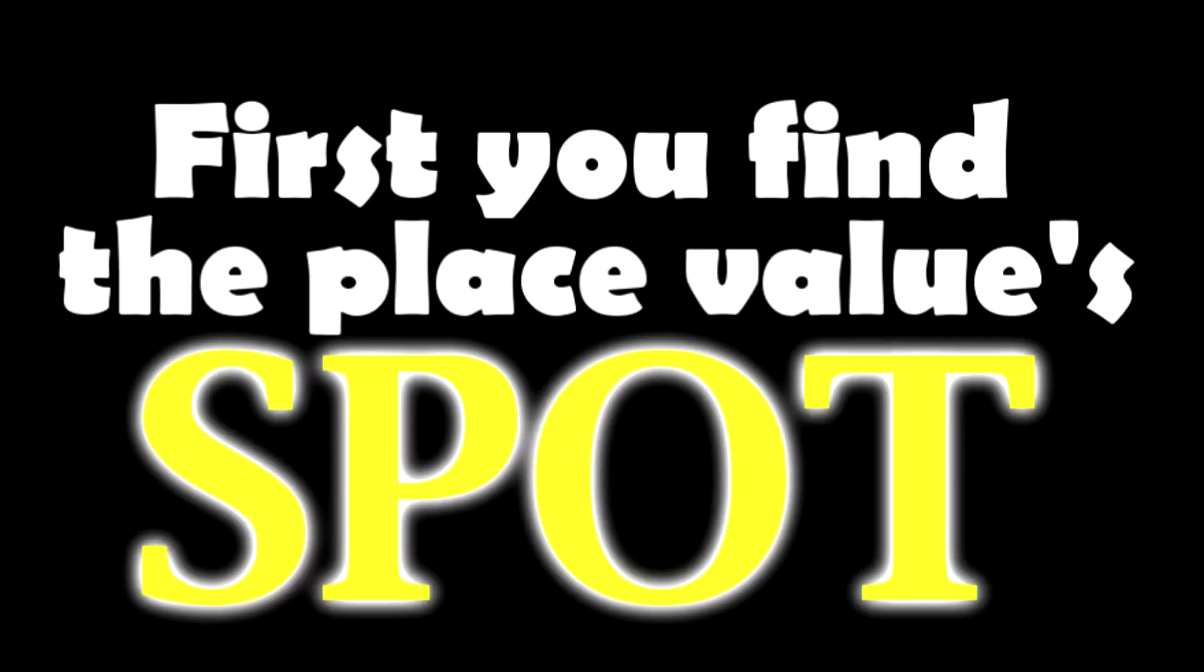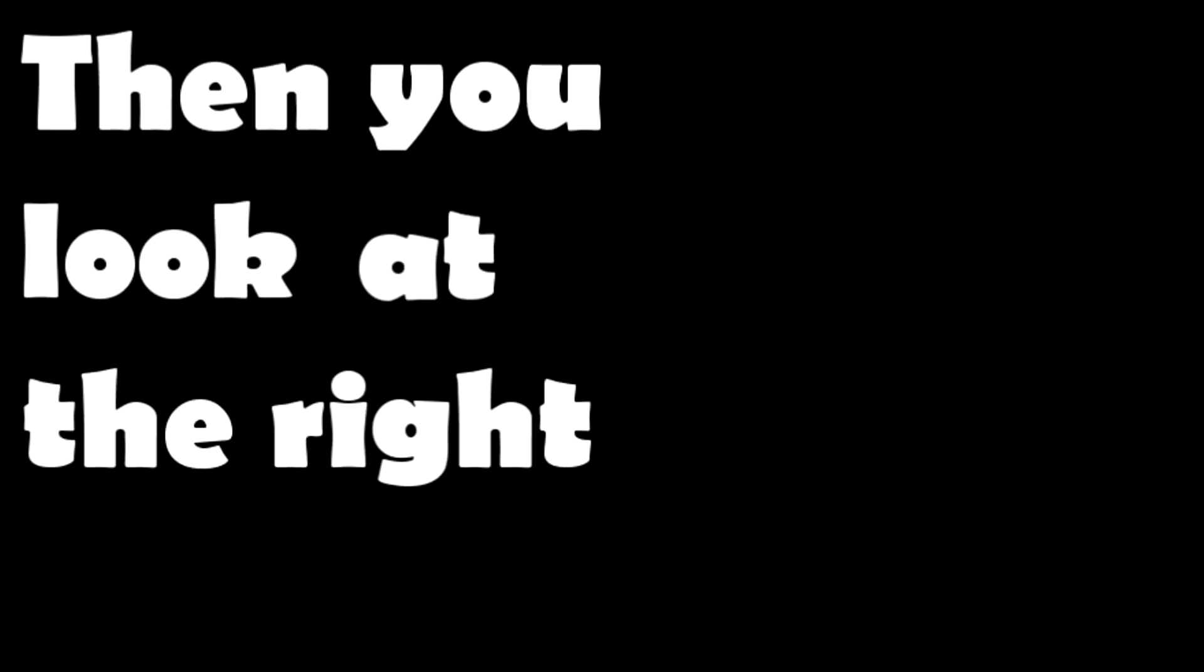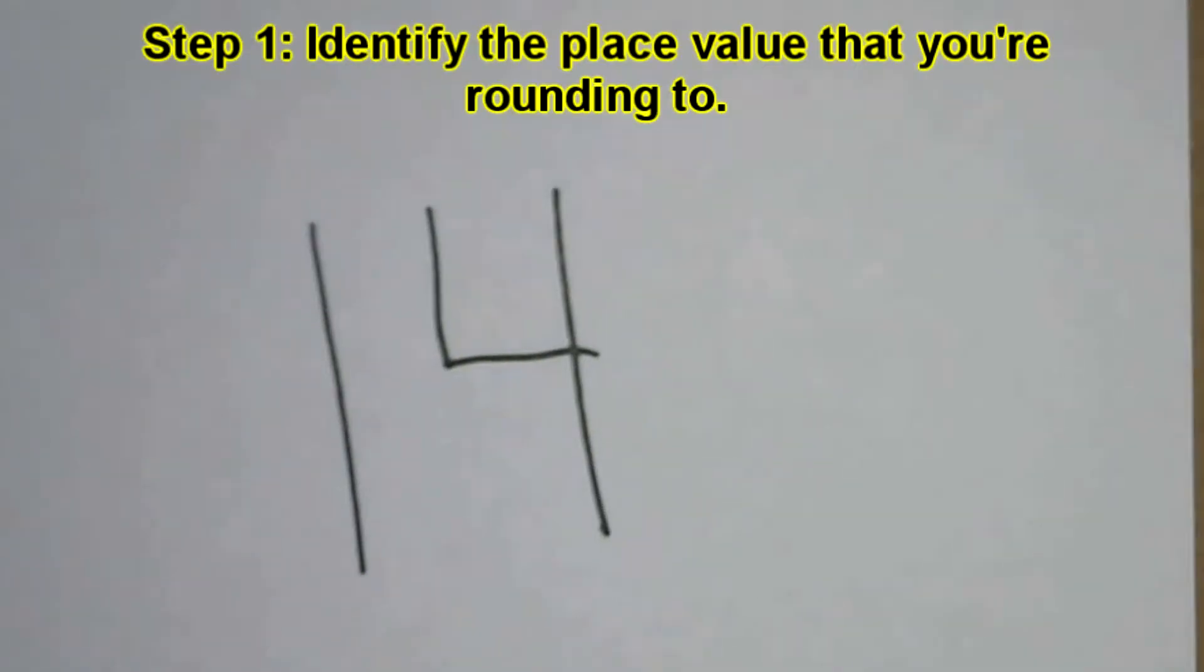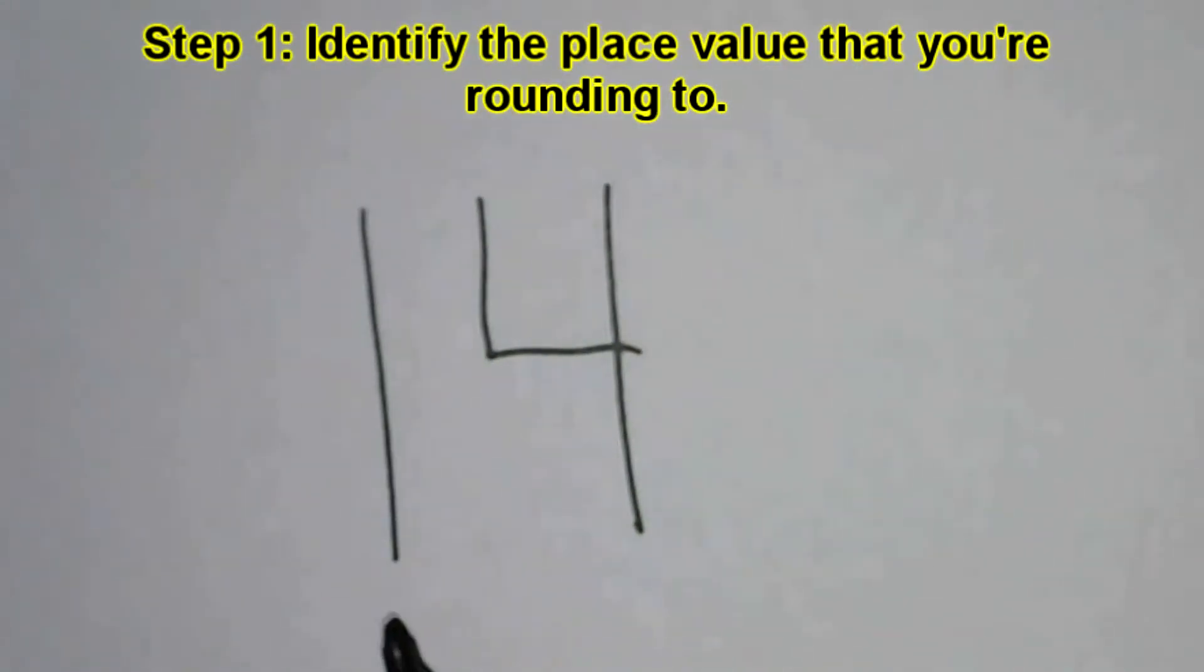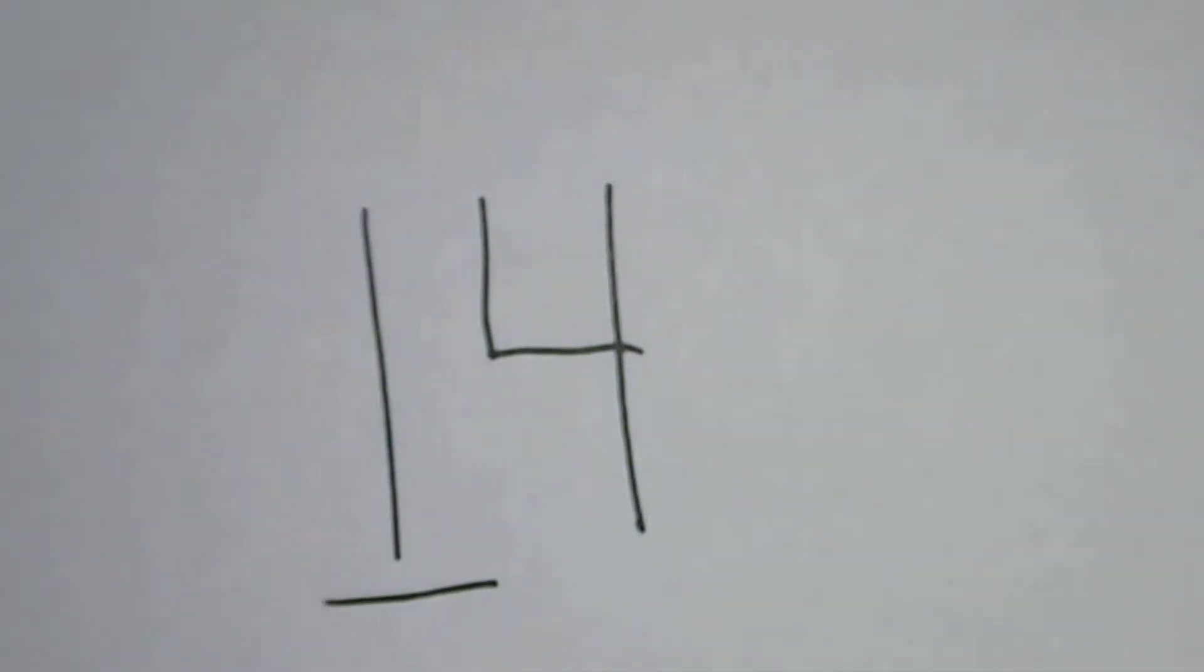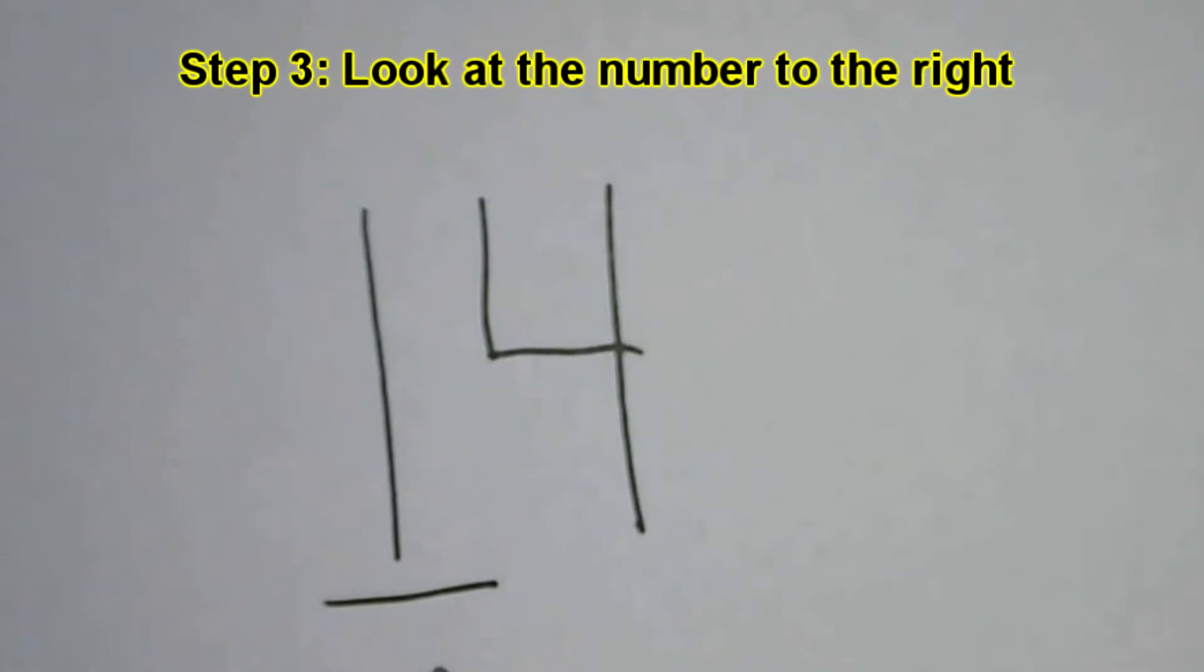First you find the place value spot, then you look at the right to the spot. Hey yo, just like a young pup, the numbers gotta grow up. If the value to the right is right, the first step: identify the place value that you're rounding to. Underline it, it's easy to do. Look at the number to its right.